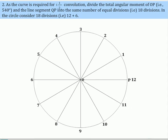As the curve is required for one and half convolutions, divide the total angular movement of OP, that is 540 degrees, and the line segment QP into the same number of equal divisions, that is 18 divisions. In the circle, consider 18 divisions, that is 12 plus 6.